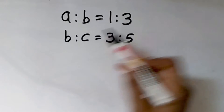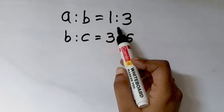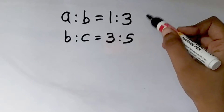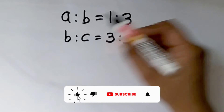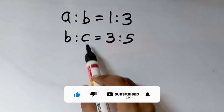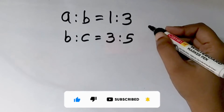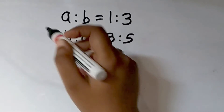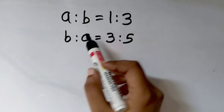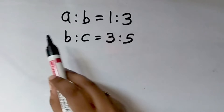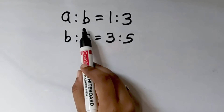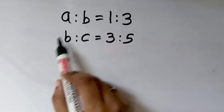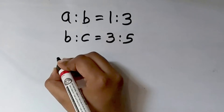Now see here there are 2 ratios: A is to B is 1 is to 3, and B is to C is 3 is to 5. Now there are 2 ratios here — A is to B is the first ratio and B is to C is the second ratio. Now what we will do is combine these 2 ratios. Now when you can combine 2 ratios, there must be some common term. Here, the second term of the first ratio and the first term of the second ratio is the same, that is B. So we can combine it.